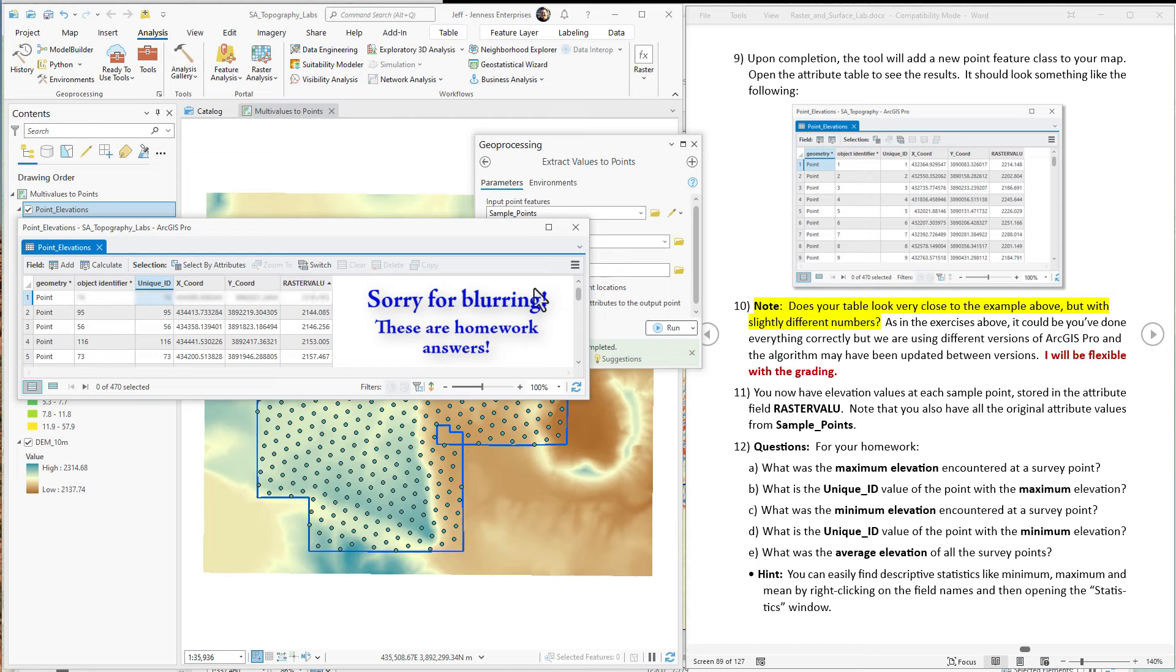So anyway, we've sorted them. So we've got the minimum value up here, got the maximum value at the bottom. All right, so that's how it works. What is the average elevation of all the survey points? Well, we find that by right clicking on this, we're going to visualize statistics.